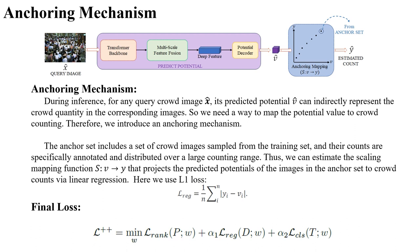Here, we use an L1 loss to fit the mapping between potential values and counts. Note that the number of images in this anchor set is very limited. Finally, our loss function is the sum of these three losses, with a certain weighting applied for balance.